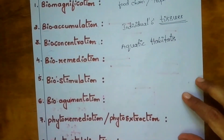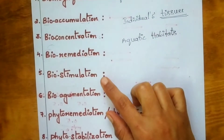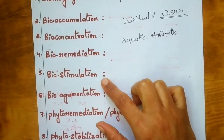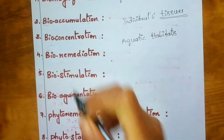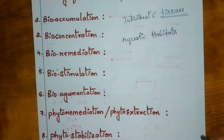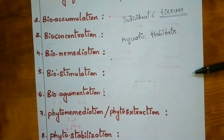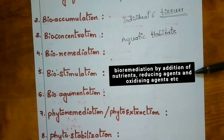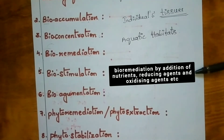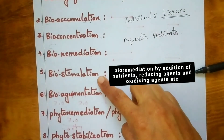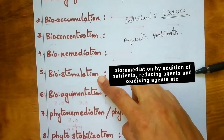The next term is biostimulation. Biostimulation means stimulation of existing organisms to achieve or undertake bioremediation by the addition of nutrients, reducing agents, and oxidizing agents. That is called biostimulation.